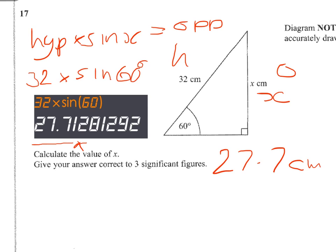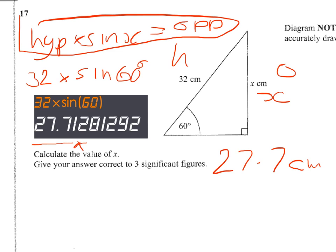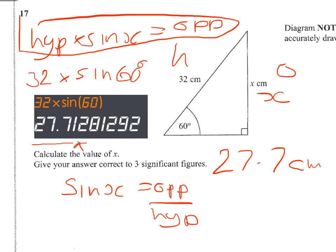If you weren't quite sure where I got this formula from, I'll quickly show you that the formula at the front of your examination paper will tell you that sine of x equals the opposite over the hypotenuse. So when you're finding lengths — especially when you're finding the opposite side and you've got the hypotenuse — simply bring the hypotenuse to the other side of the equation to get the equation that I used.